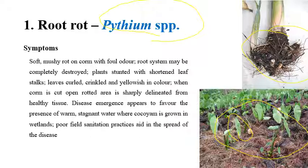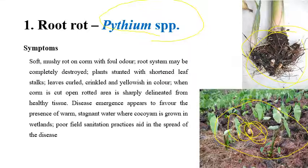Yellowing of leaves can also be observed in infected plants. If you cut open the infected root area, the rotted area is sharply delineated from the healthy tissue.